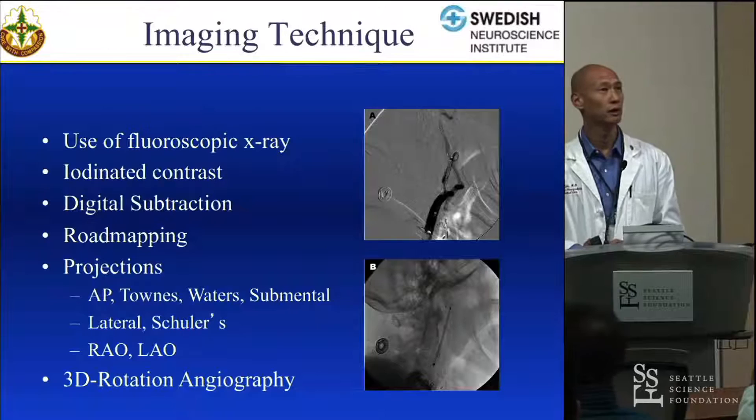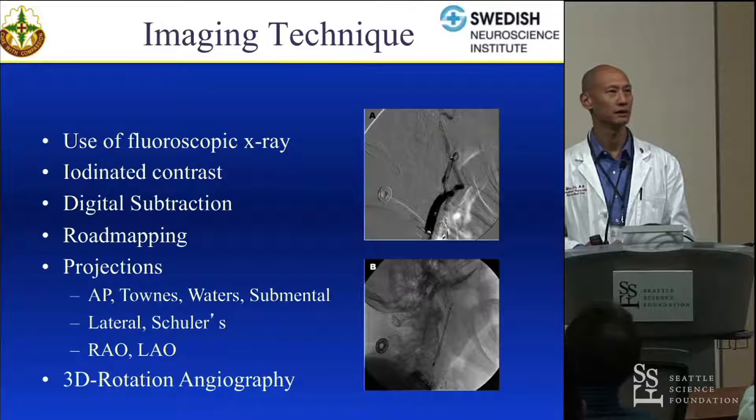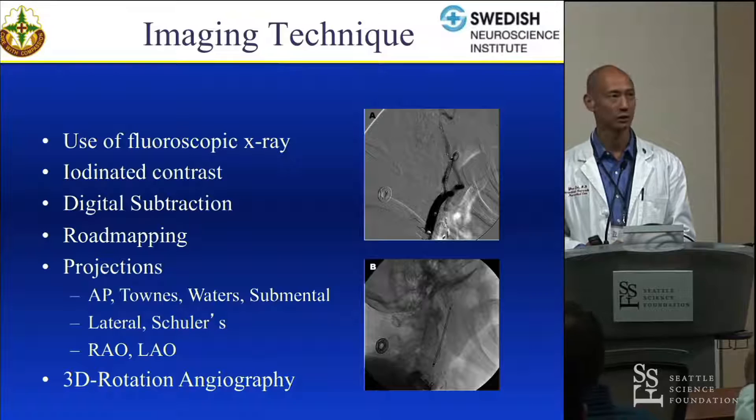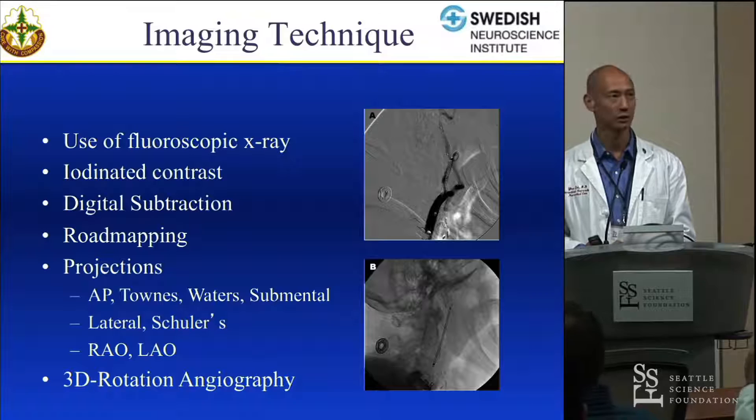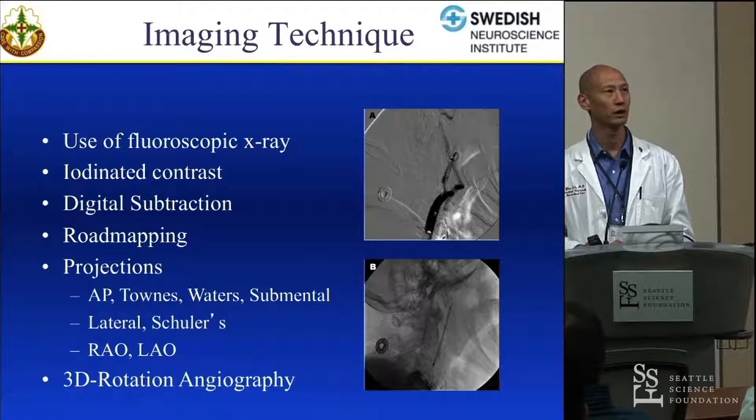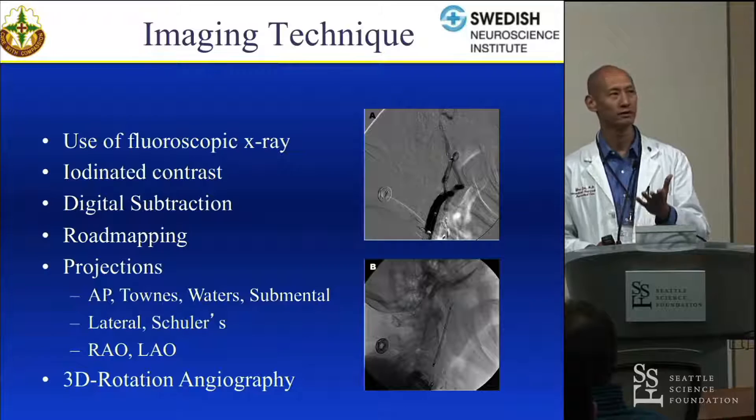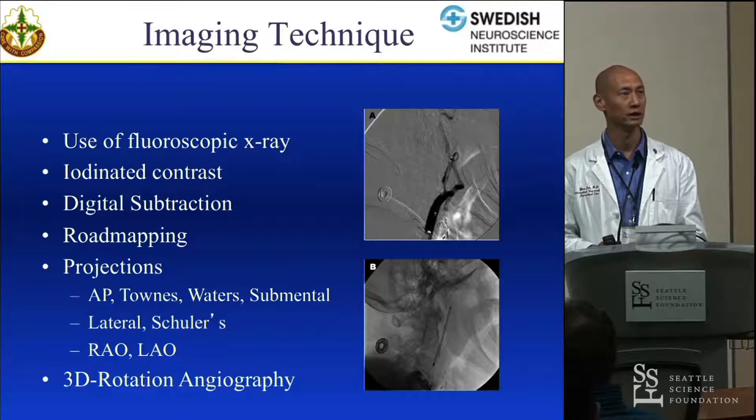Some basics for those of you that don't know the basic physics behind angio: it's the use of fluoroscopic x-ray. We use iodinated contrast, and we have a lot of modern technology that makes the imaging quite good. With digital subtraction, you get a snapshot of the soft tissue, the bone, everything, and then it's digitally subtracted pixel to pixel. When you have something live — like the injection of dye — the dye is the only thing that shows up, making a very clean picture of just the vasculature.